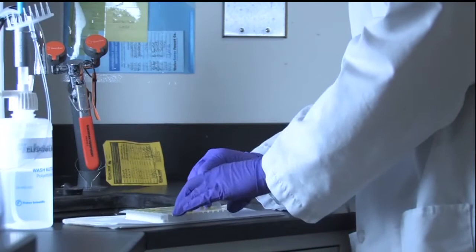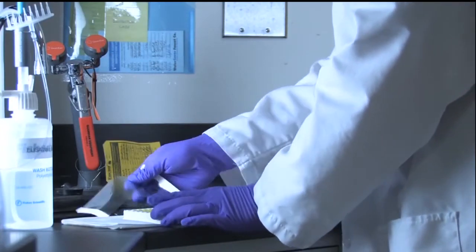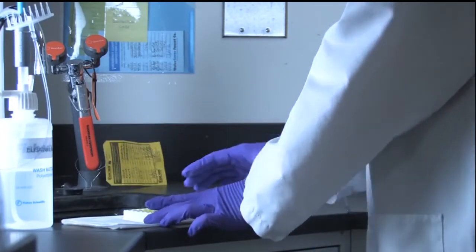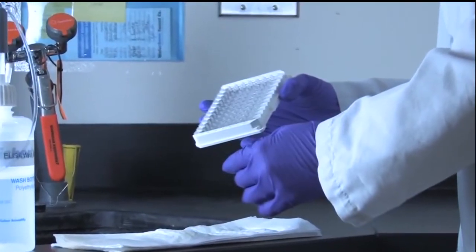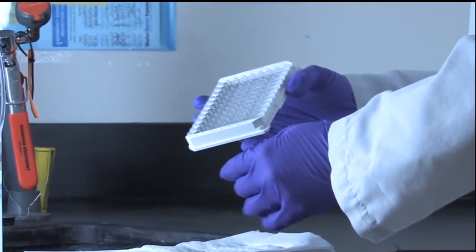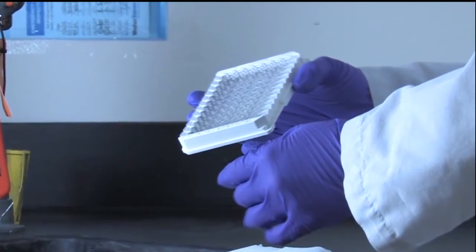If necessary, remove the plate sealer or covering that was used in the previous step of the assay. Squeeze the center tabs of the plate frame to ensure strips will not fall out of the frame during discard and drying.